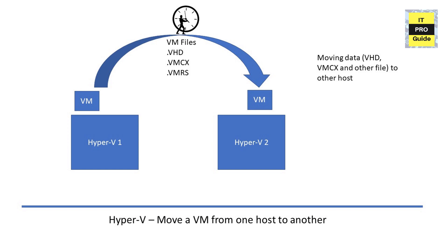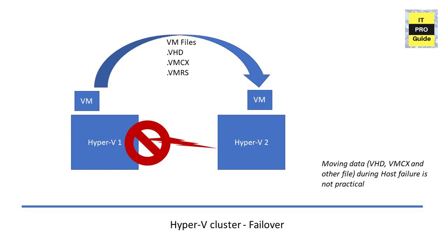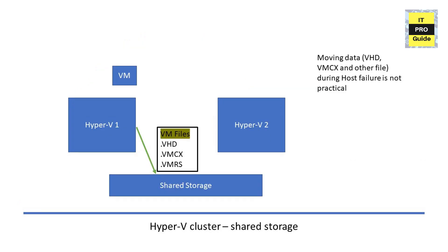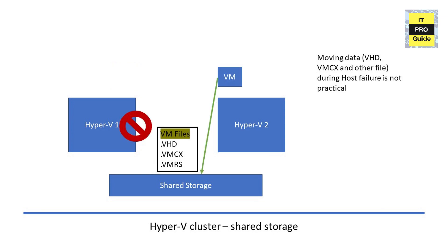Before we talk about virtual machine automated failover, consider moving a virtual machine from Hyper-V 1 to Hyper-V 2. You have to move all the files that make up a virtual machine from Hyper-V 1 local storage to Hyper-V 2. Moving these files over the network takes time because you have to move at minimum 20 GB of data. And if Hyper-V 1 is not accessible due to a failure, moving this data becomes impossible as the local storage is not accessible.